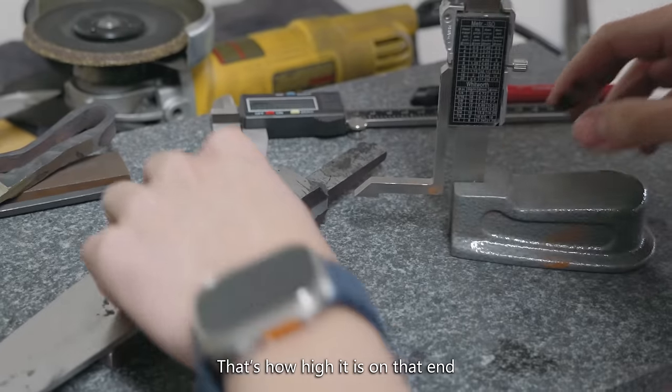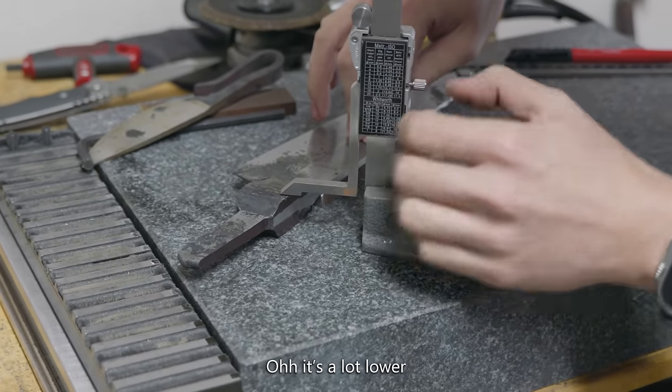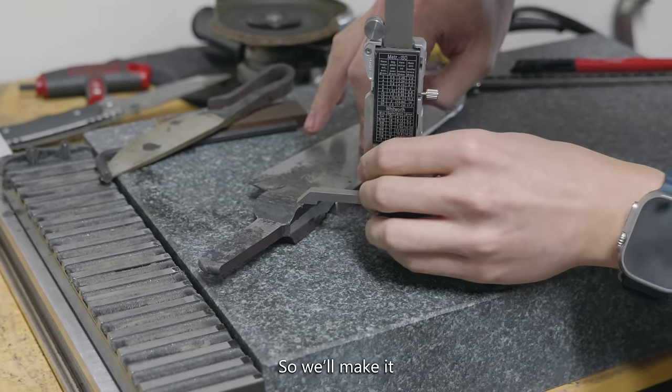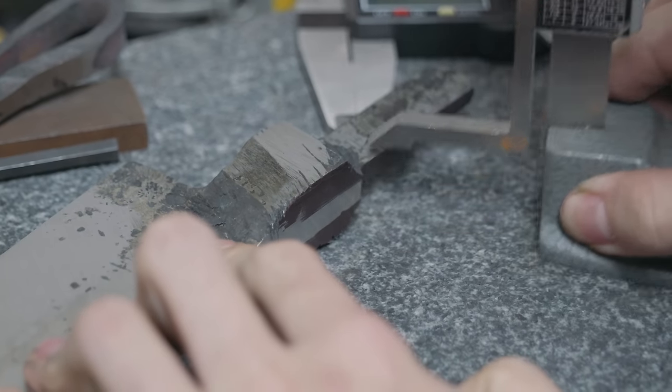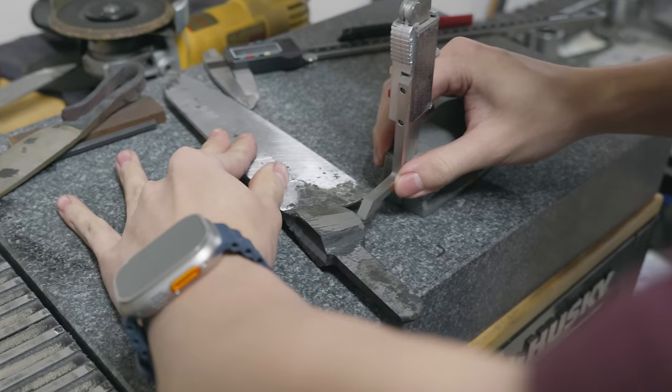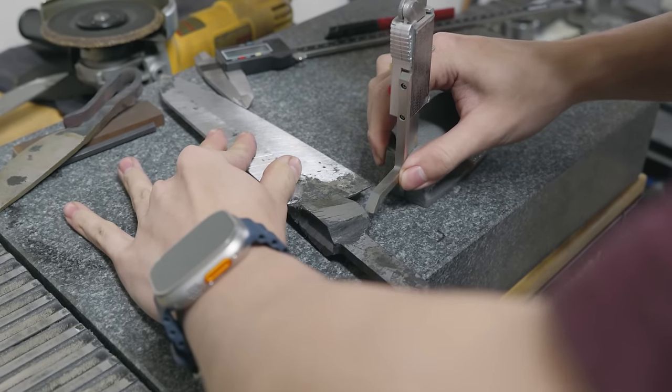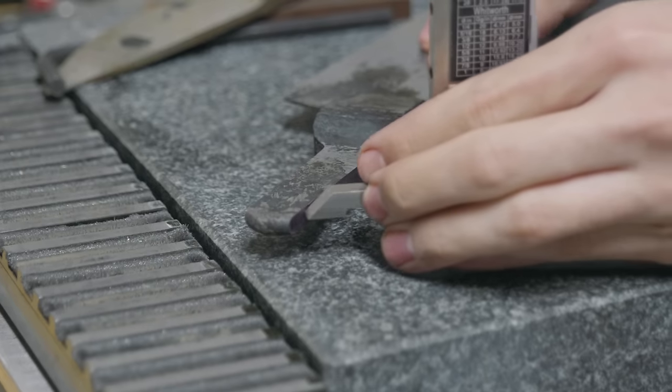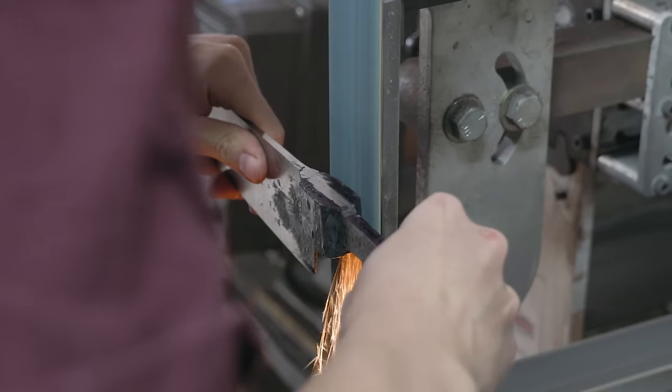That's how high it is on that end. How high is it on this end? Oh, it's a lot lower. So we'll make the other side to the height of this. What I'm doing here isn't 100% accurate because I don't really have calibrated blocks yet. What I'm doing here is sort of just getting a general ballpark for getting my bolster symmetrical. I don't need it to be within like a thousandths of an inch. I just need it to be accurate enough so that I can start referencing other surfaces off of the bolster.